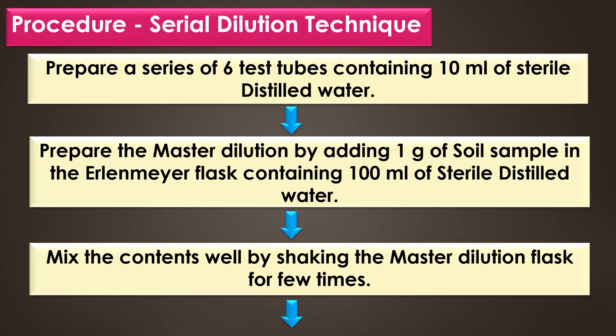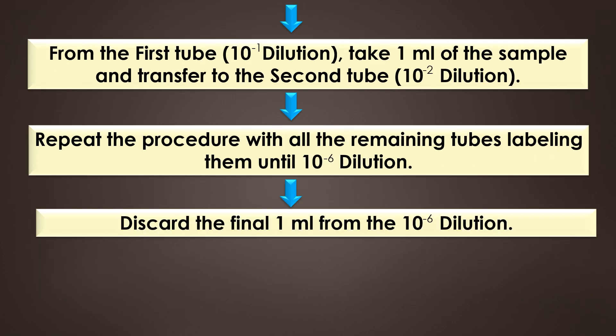Procedure — the first step is the serial dilution technique. Prepare a series of six tubes containing 10 ml of sterile distilled water. Prepare the master dilution by adding 1 gram of soil sample into an Erlenmeyer flask containing 100 ml of sterile distilled water. Mix the contents well by shaking the master dilution flask several times.